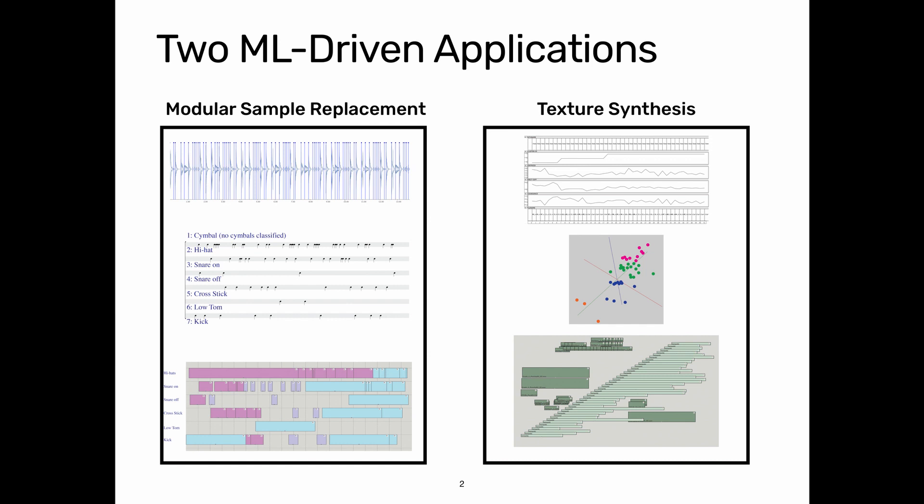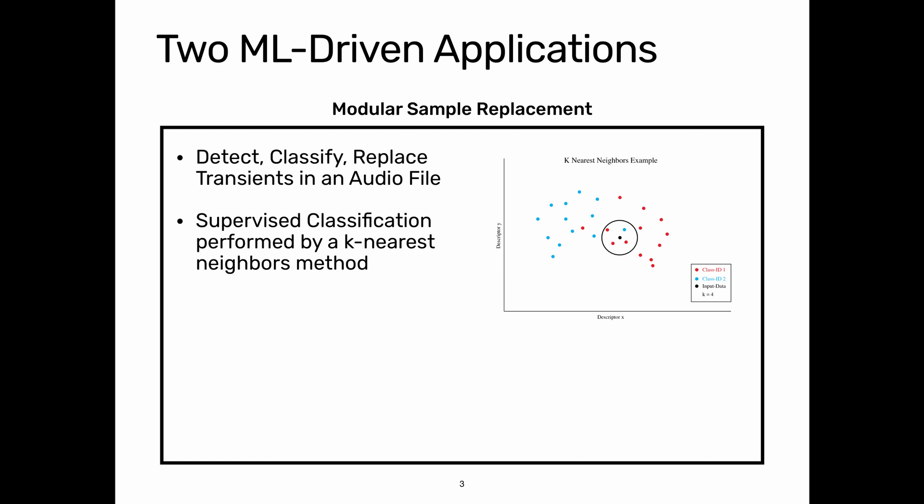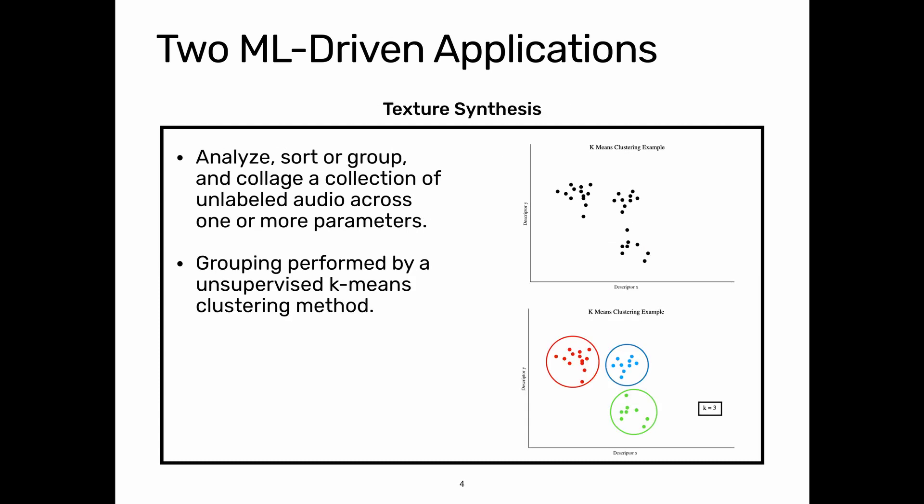The first tool drives a sample replacement engine — it detects transients, classifies them, and then replaces them with other audio samples. The second tool is a texture synthesis patch that can sort and organize large amounts of audio based around a single parameter or multiple parameters. The sample replacement uses a k-nearest neighbors classification method, and the texture synthesis patch uses a k-means clustering algorithm.